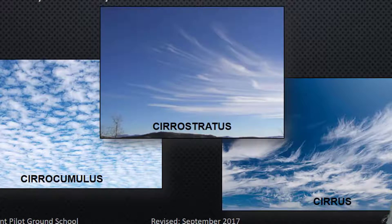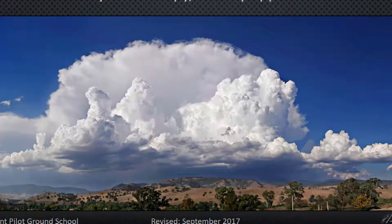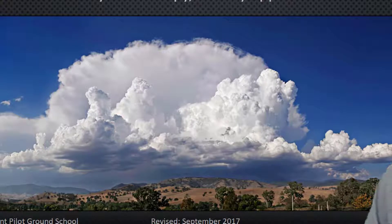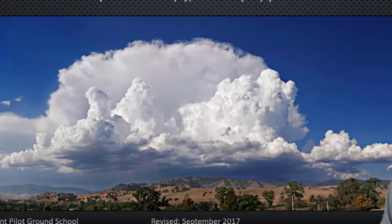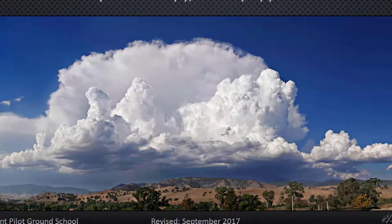Clouds formed by vertical currents in unstable air are cumulus, meaning accumulation or heap — heap clouds is a good way of thinking about it. They are characterized by their lumpy, billowy appearance, like the picture showing those big billowy clouds.